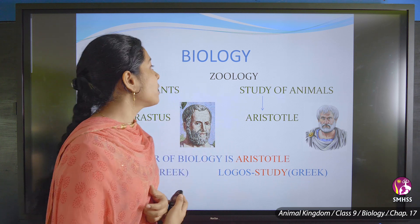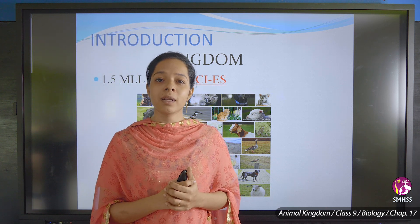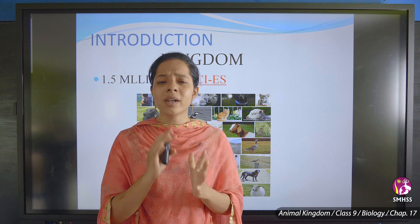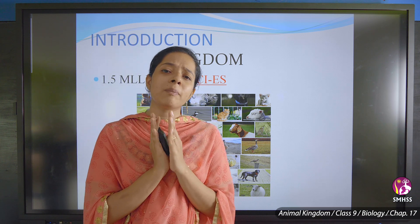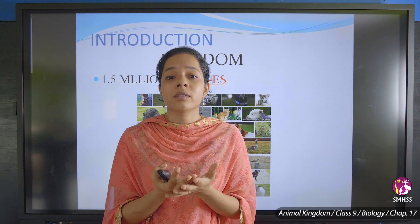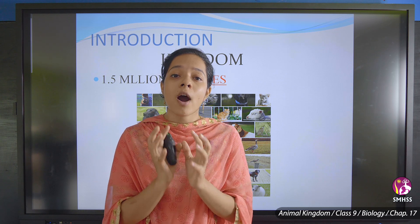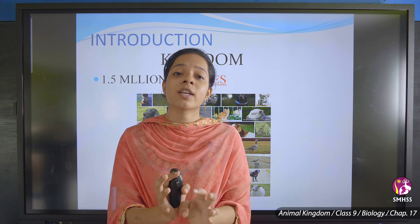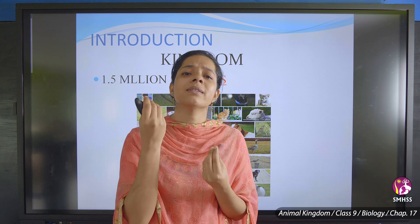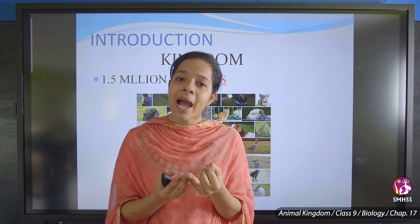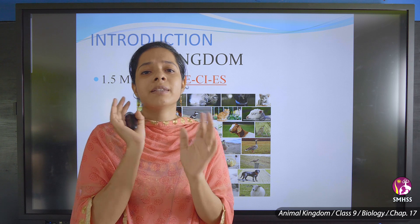Now let us know what is the kingdom. This chapter is all about the animal kingdom. Kingdom refers to the organisms and species present all over the world — animals, plants, fishes, sea animals, all the plants, trees, herbs, insects, reptiles — everything comes under the kingdom.